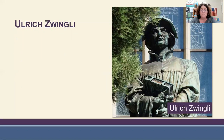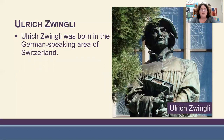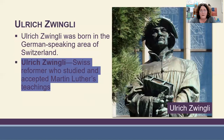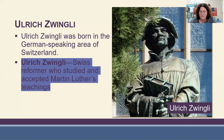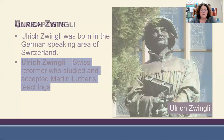Ulrich Zwingli was born in a German-speaking area of Switzerland. He became acquainted with Erasmus, who encouraged him to study the Bible. He was a priest in the Roman church but was displeased with its corruption. In 1519 he became the preacher at the largest church in Zurich. He read Luther's writings and realized salvation comes by grace through faith, began preaching from the Bible, and wrote a document known as the 67 Conclusions, rejecting many Roman doctrines such as the mass, celibacy, purgatory, and the exalted claims of the pope.